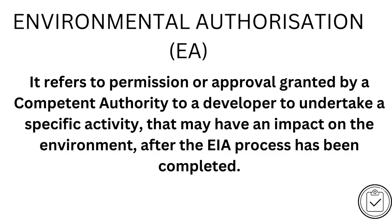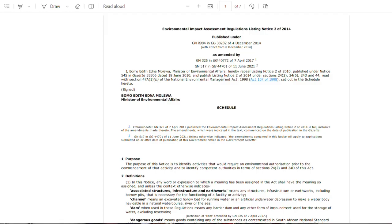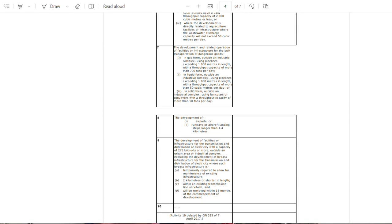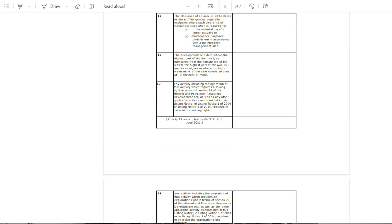In terms of Section 24 of NEMA, certain listed activities require what is known as an environmental authorization before they can proceed. These are normally activities which have detrimental impacts on the environment, such as mining, construction, building roads, and forestry. The minister responsible for the environment has a duty to publish listing notices identifying these activities.